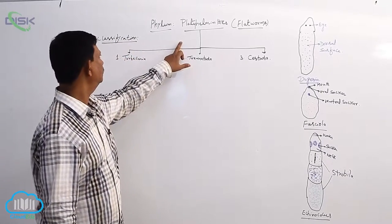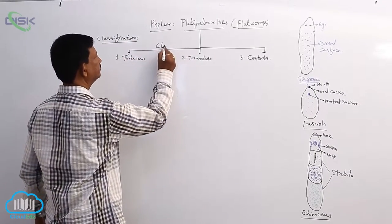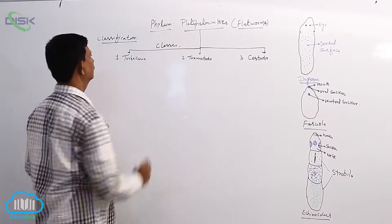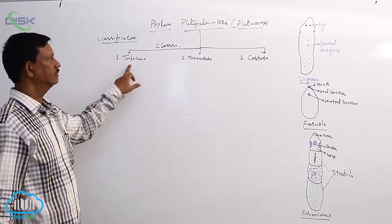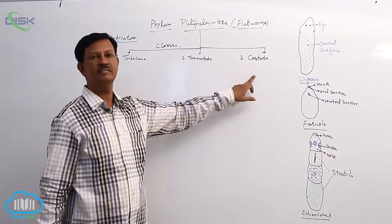Platyhelminthes is divided into three classes: Turbellaria, Trematoda, and Cestoda.